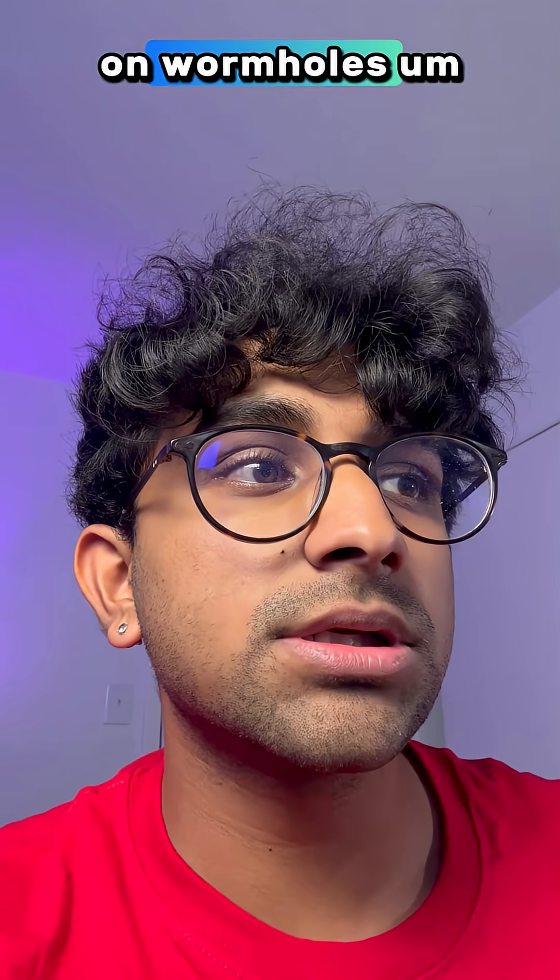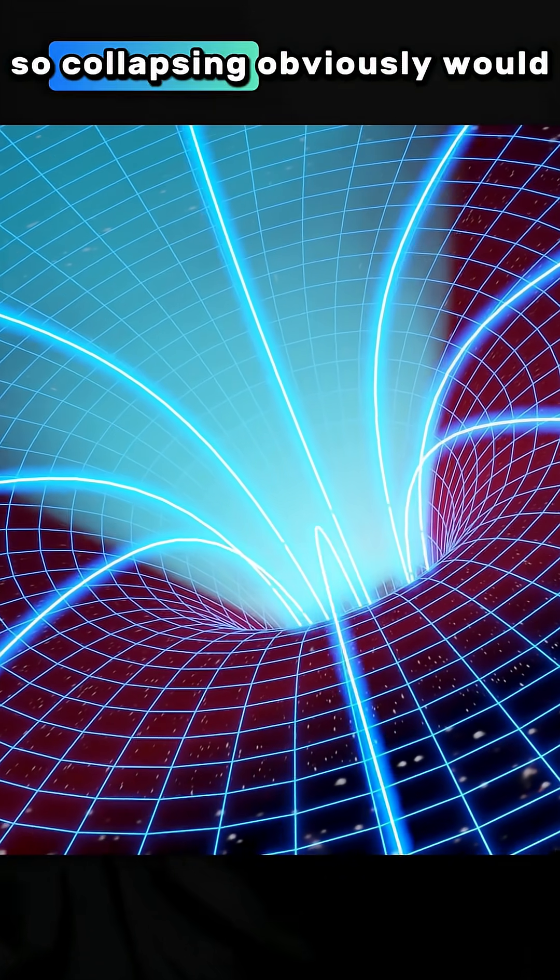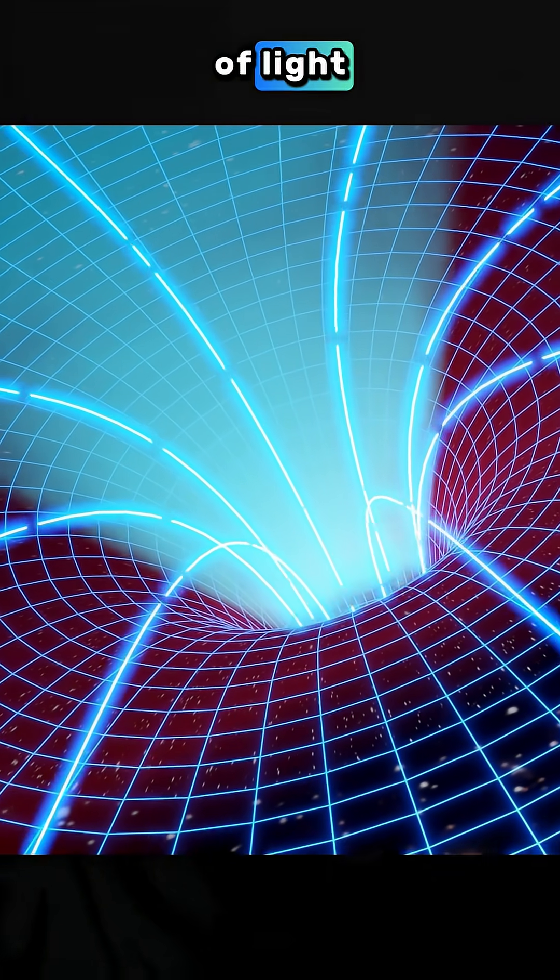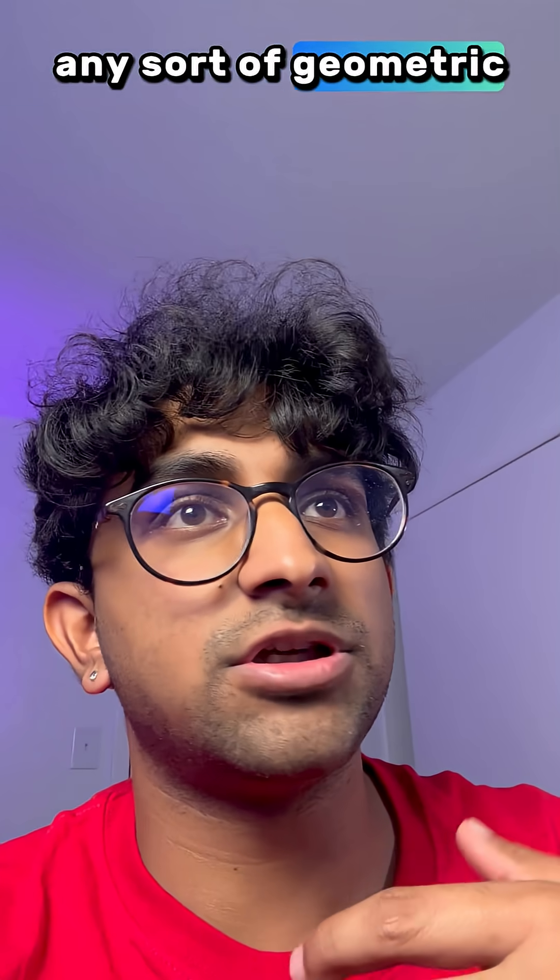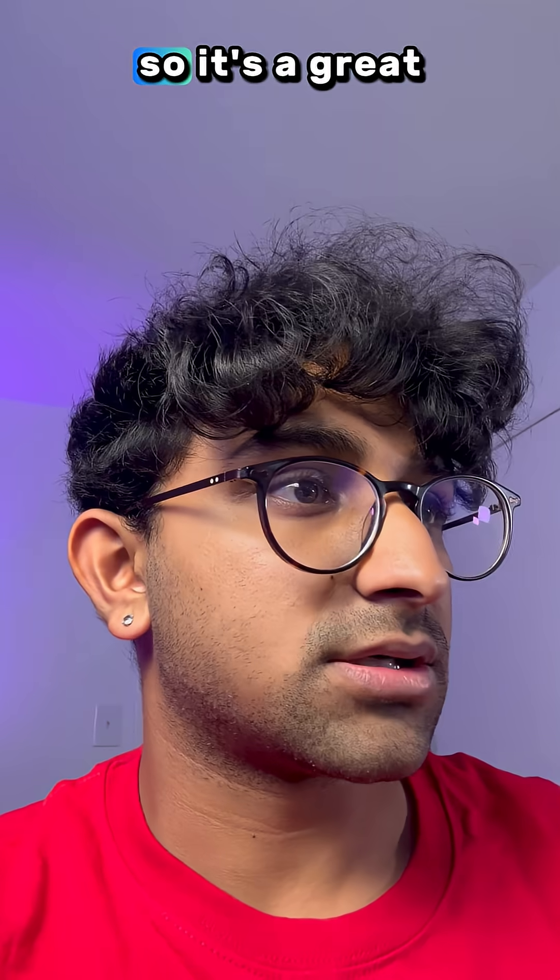On wormholes, instantaneous collapsing isn't a thing again, so collapsing obviously would happen at the speed of light. Any sort of geometric changes as well would happen at the speed of light. And often you need exotic matter, quantum gravity to even describe wormholes consistently.